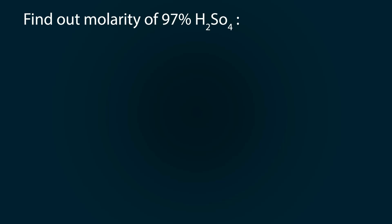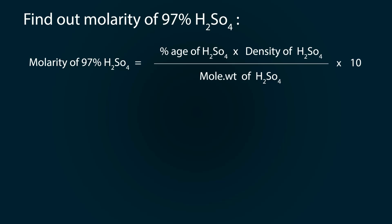To start our calculation, let's find out the molarity of 97% H2SO4. The formula is: molarity equals percentage multiplied by density, divided by molecular weight, and multiplied by 10. Putting the values: 97% × 1.84 ÷ 98 × 10, which gives molarity as 18.2.